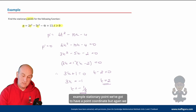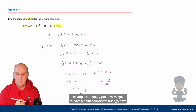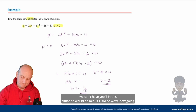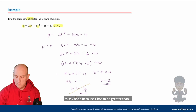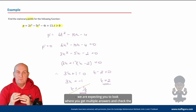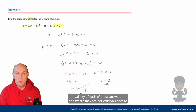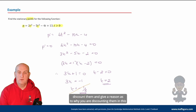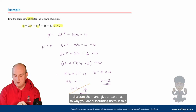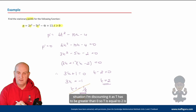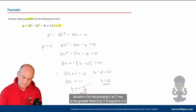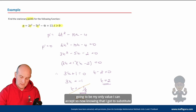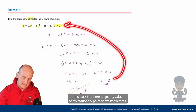A stationary point must have a coordinate. But we come back to the condition: t has to be greater than zero. So t = -⅓ is discounted because t must be greater than zero. VCE expects you to check the validity of each answer and give a reason for discounting. So t = 2 is my only valid value. Now I substitute back into the original to find p.